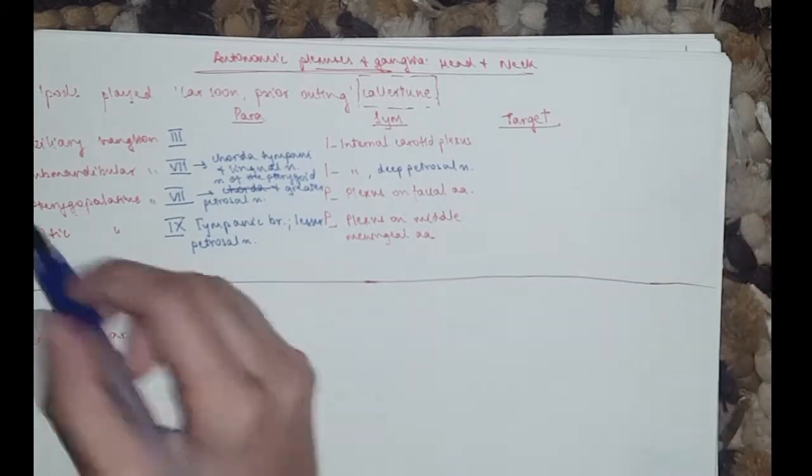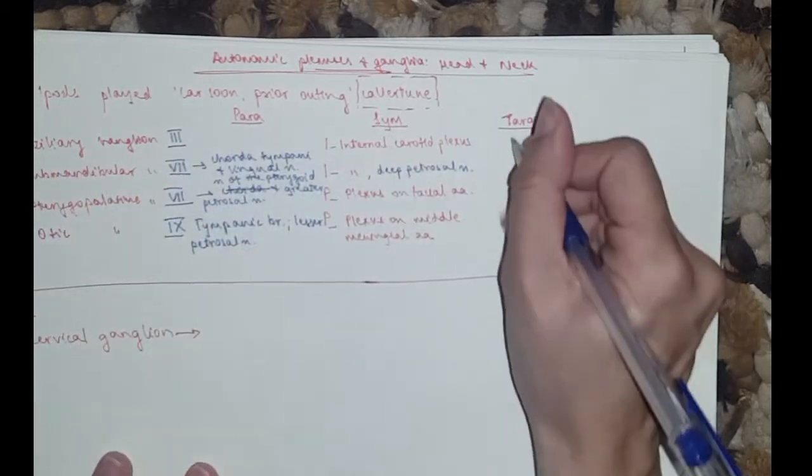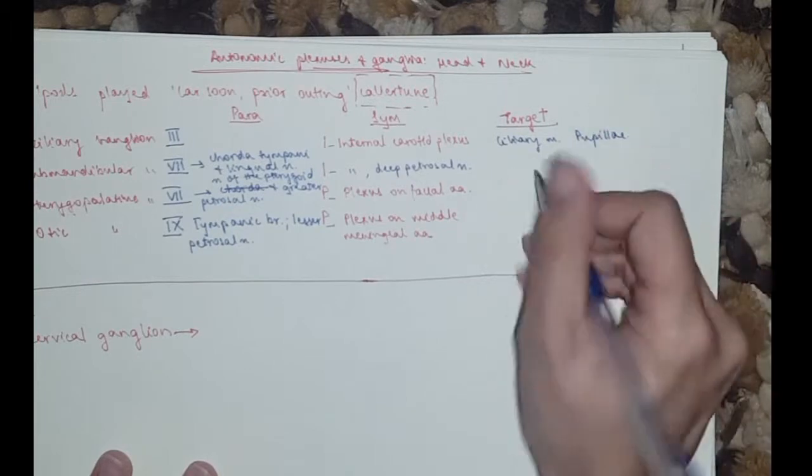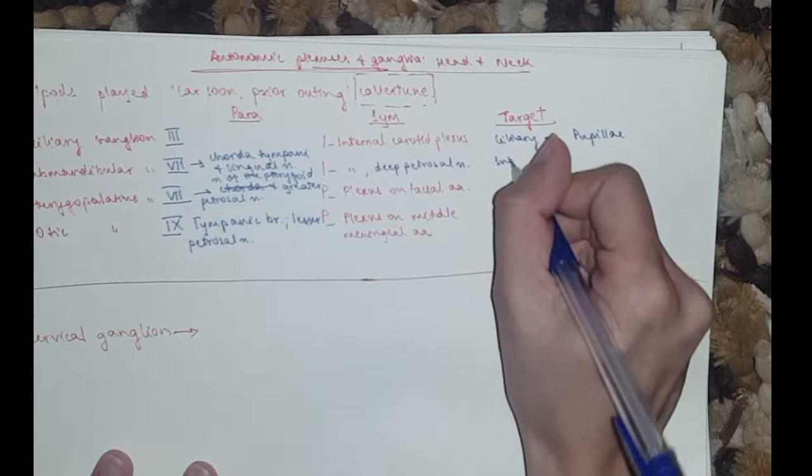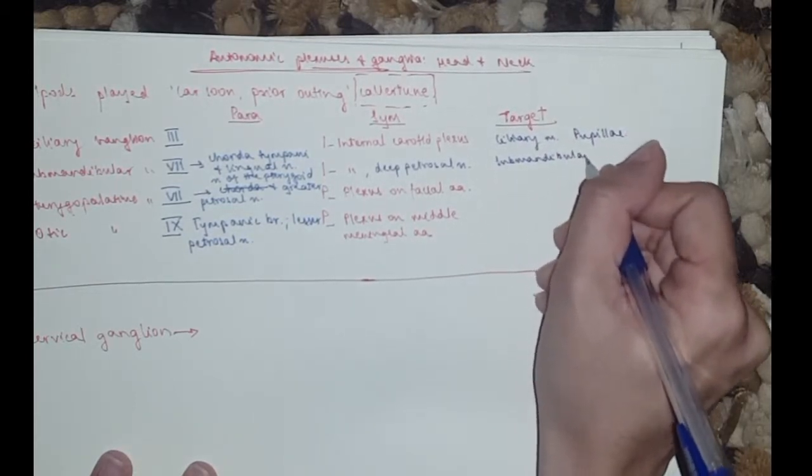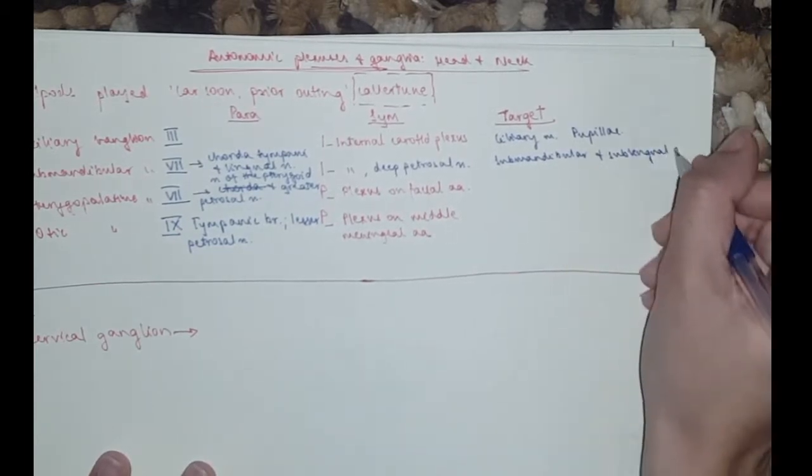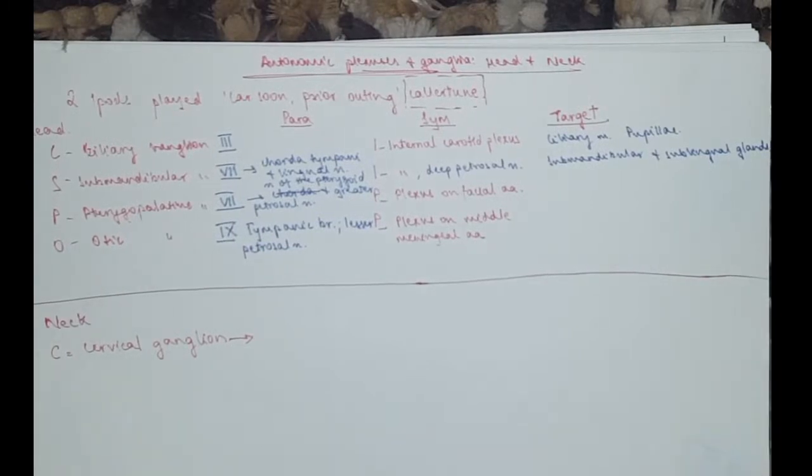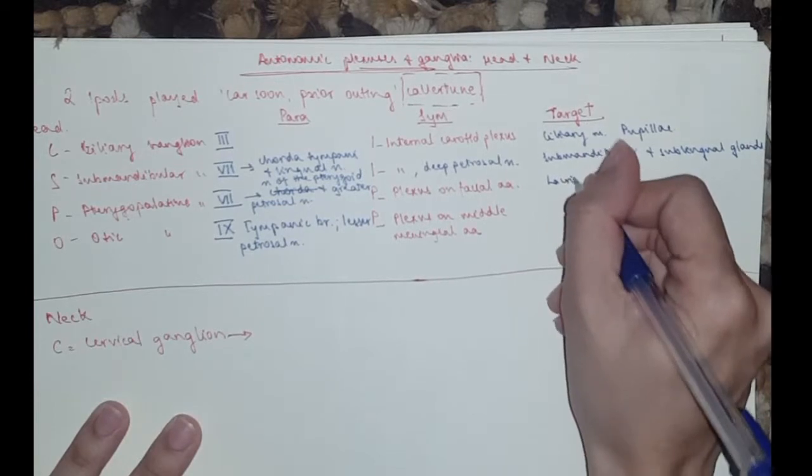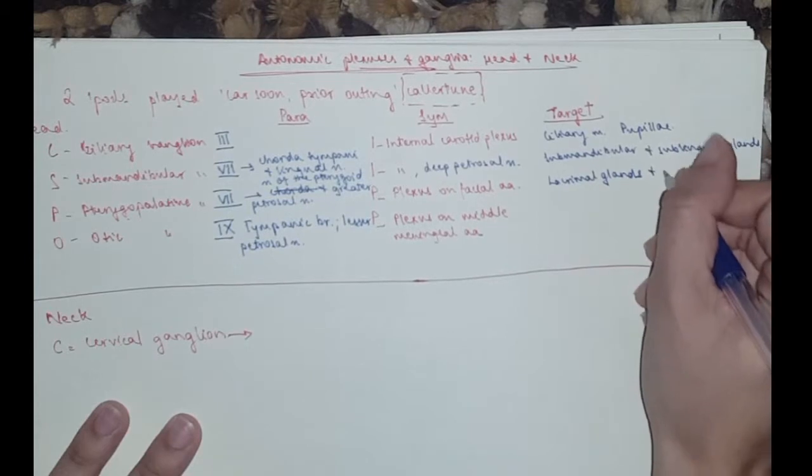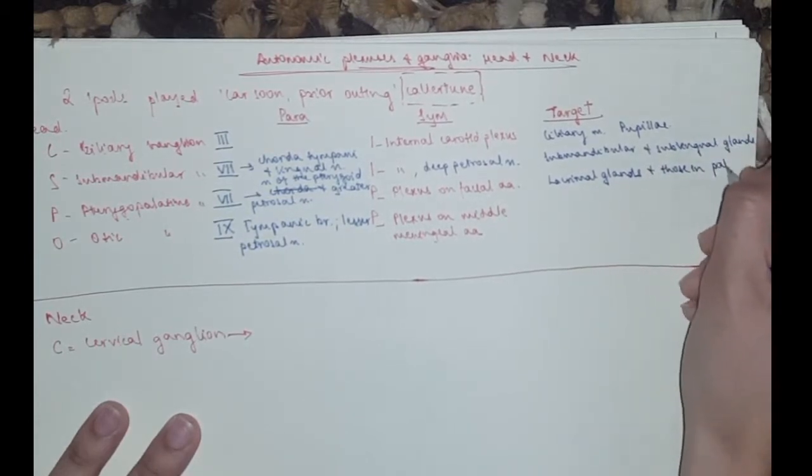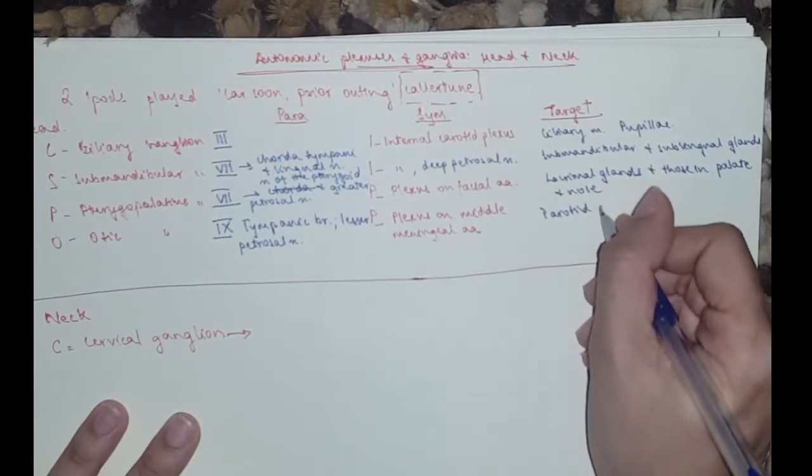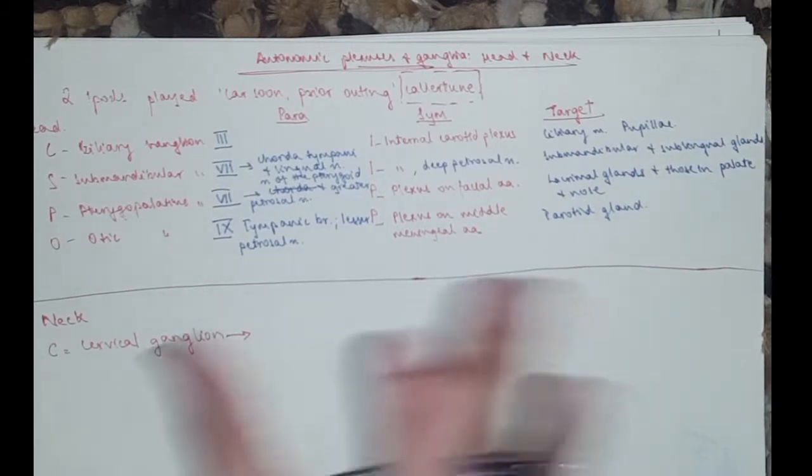And that is it. Now for the target, the ciliary, you've got the target is the ciliary muscle and the pupillae. The submandibular is the submandibular and the sublingual glands. For the pterygopalatine, you'd have the lacrimal gland, glands in the palate and the nose. For the otic, you've got the parotid gland. That is it for the head.